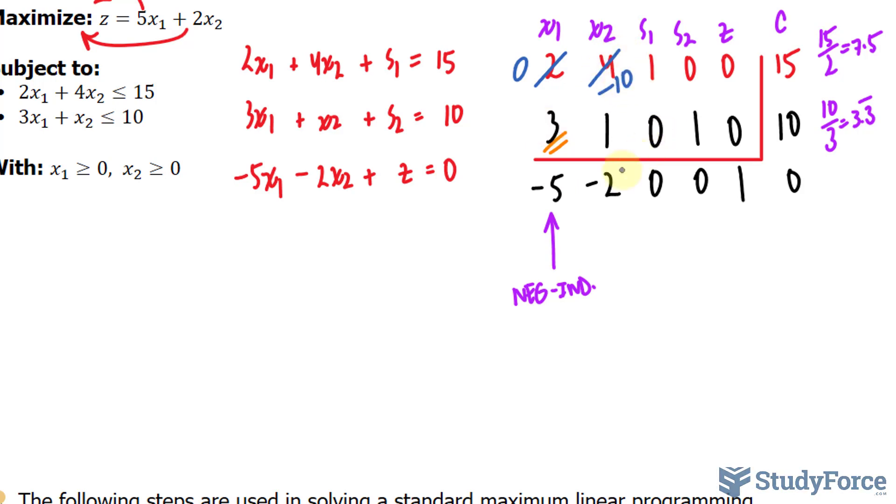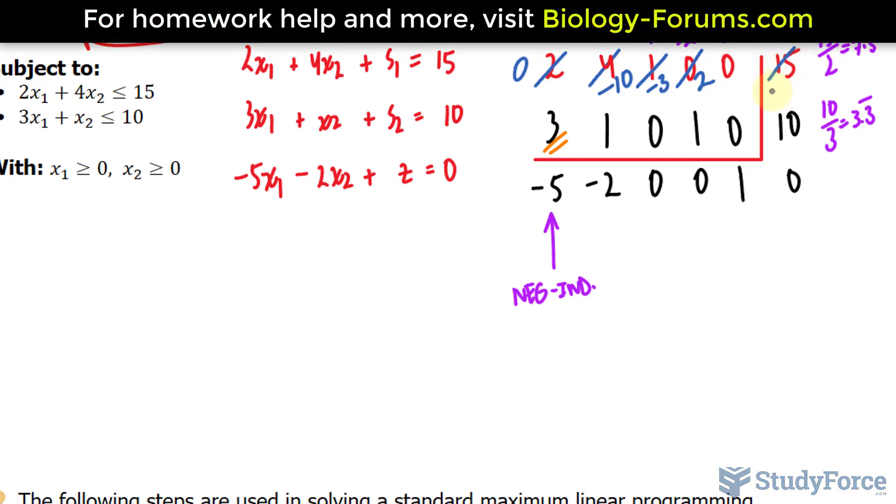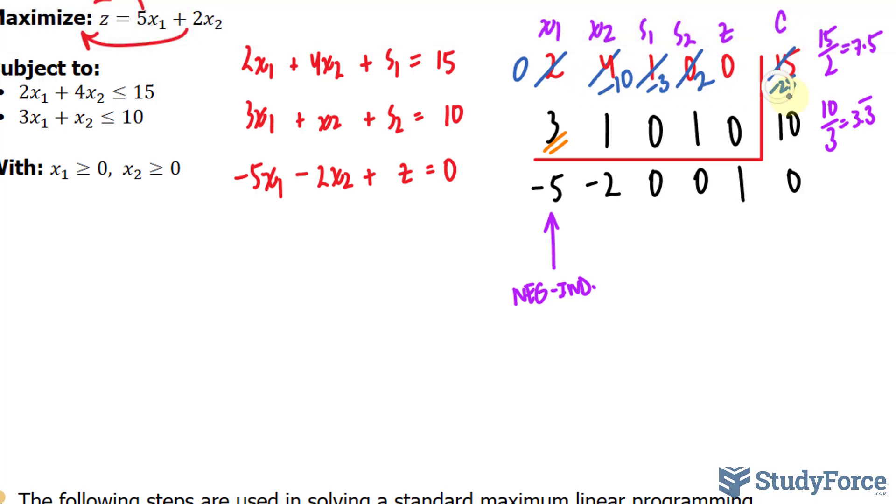This times 2 is equal to 10. This times 2 is 0. Minus 3 is negative 3. This becomes a 2 minus 0. That's a 2. And these remain as zeros. 10 times 2 is 20 minus 45 is equal to negative 25. If you like, you can multiply the whole row by a negative number in case you don't want negative numbers. And these become positive 10, positive 3, negative 2, and positive 25. I'll go ahead and do that. That becomes plus 10, plus 3, negative 2, and plus 25. Notice that has become a 0.